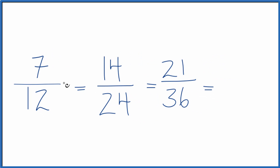We could also multiply by 4. 7 times 4 is 28, and 12 times 4 is 48. So you get the idea.